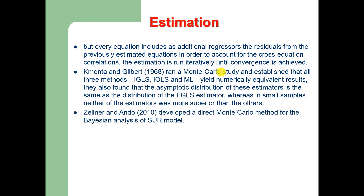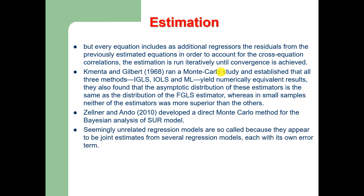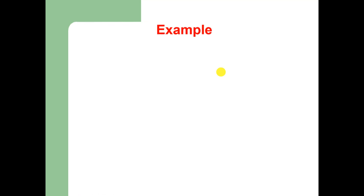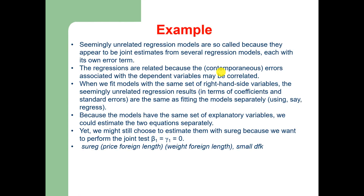Zellner and Ando in a 2010 paper developed a direct Monte Carlo method for the Bayesian analysis of the SUR model. Seemingly unrelated regression models are so called because they appear to be joint estimates from several regression models each with its own error term. When we fit models with the same set of right-hand side variables, the SUR results are the same as fitting the models separately using ordinary least squares.